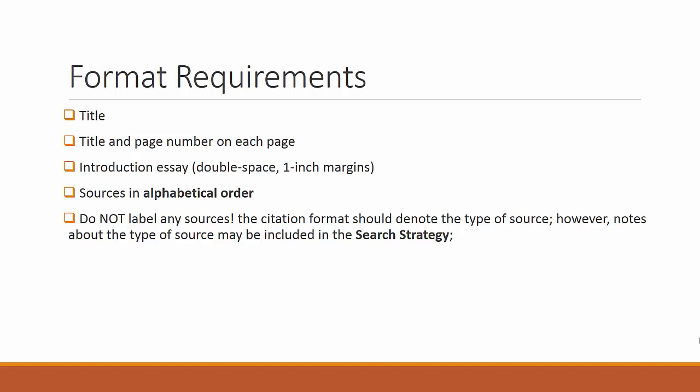Start your annotated bibliography with a title — I suggest the title of the would-be research project. Make sure the pages are numbered with a brief title on each page; this is called a running head. A title page is not necessary. Simply begin with the introduction essay, double-spaced with one-inch margins. Put your sources in alphabetical order of the first word of the citation, usually the author's last name, with the citation, then the search strategy, the SCORE assessment, and relevance comment for each. The type of source should be clear from the citation format, but if you need to clarify the source type, put that information in the search strategy.